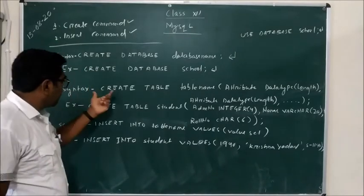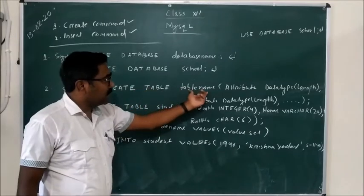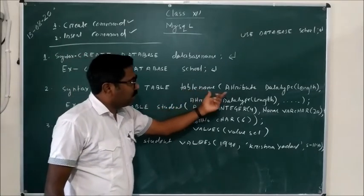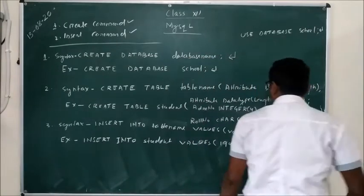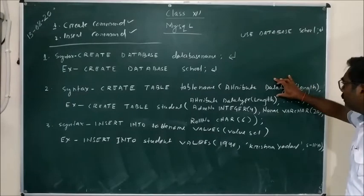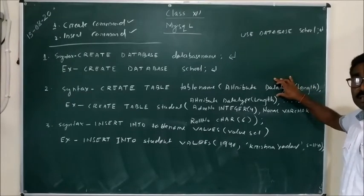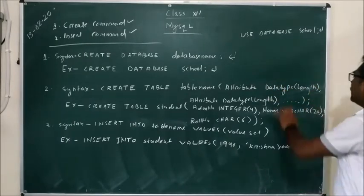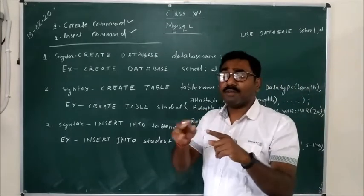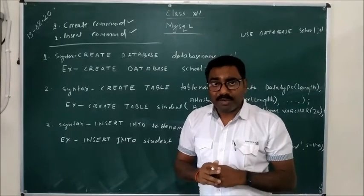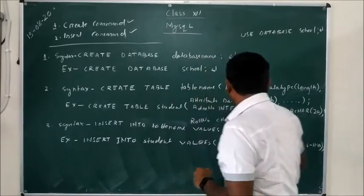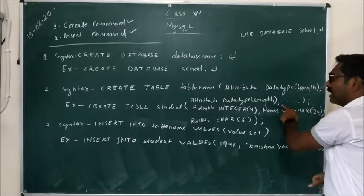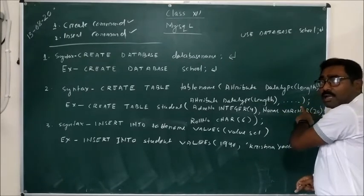Once the database has been created and selected, you can create a table. The same CREATE command is used for creating a table. The syntax is: CREATE TABLE, then the table name, followed by the attribute name, its data type, and the length. Multiple attributes are separated by commas. The length refers to the width of characters or numbers that can be entered in that particular field.